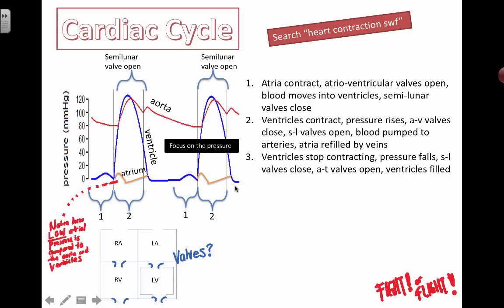Afterwards, stage three: the ventricles stop contracting, the pressure falls, the semilunar valves close, the atrioventricular valves open, and the ventricles get filled again — then the entire process repeats. Focus on the pressures and what's happening. Don't try to memorize this as a diagram — think logically. When the ventricles are contracting, where is the high pressure? Which valves are open? Which are closed? Reasoning it out gives you a better approach than memorizing all these events as separate facts.